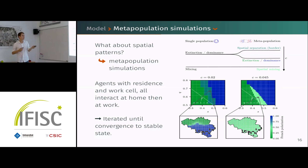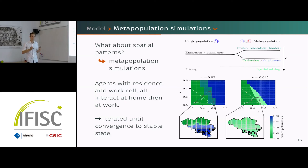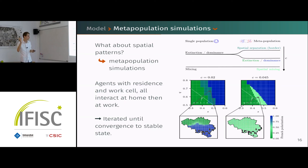In these simulations, agents have a home cell and a work cell. At every step they first go home and interact with whoever they find there, then go to work and interact again with different people, who may cause them to switch languages. We iterate this model until convergence and explore the parameter space.